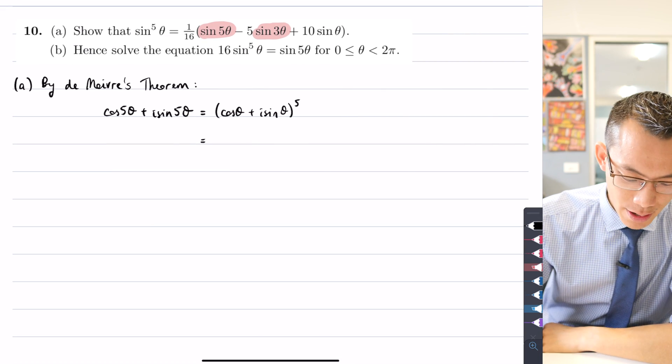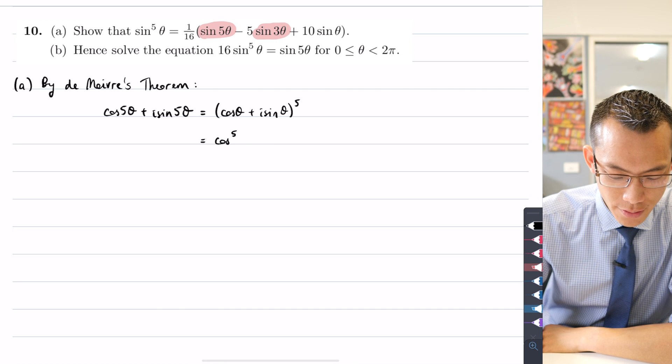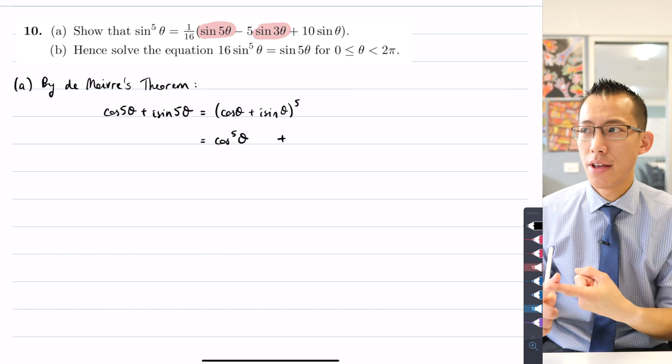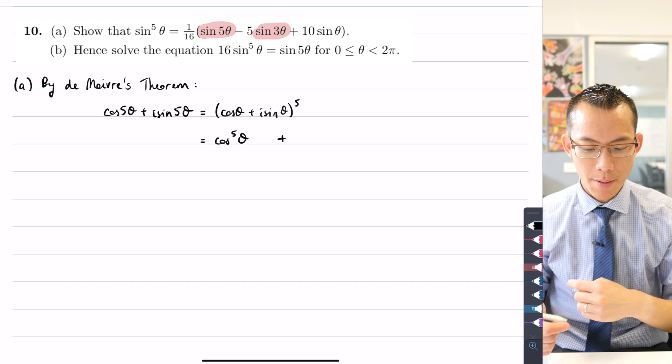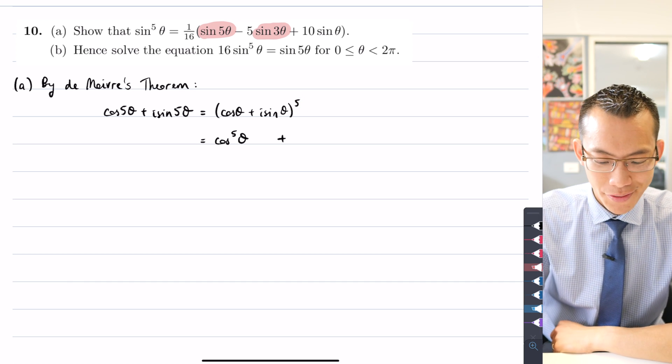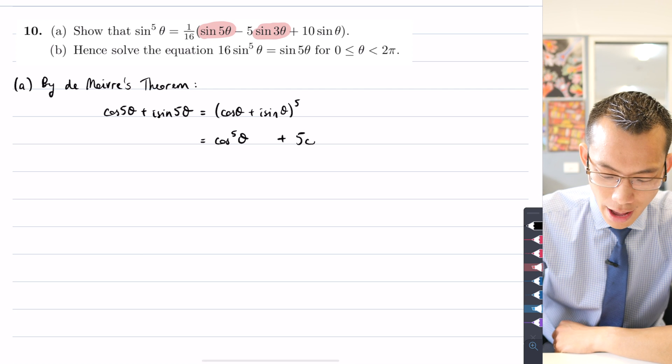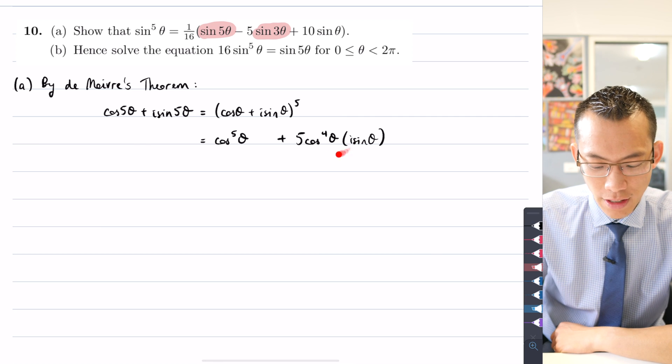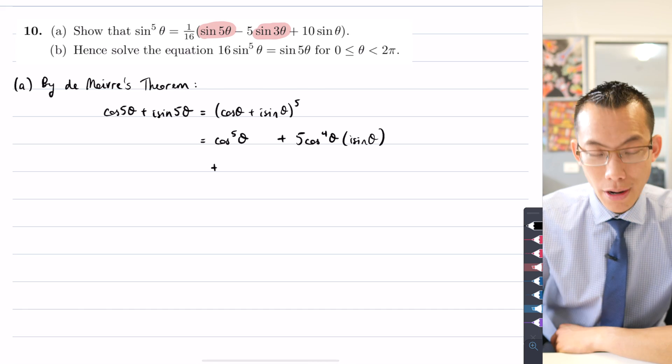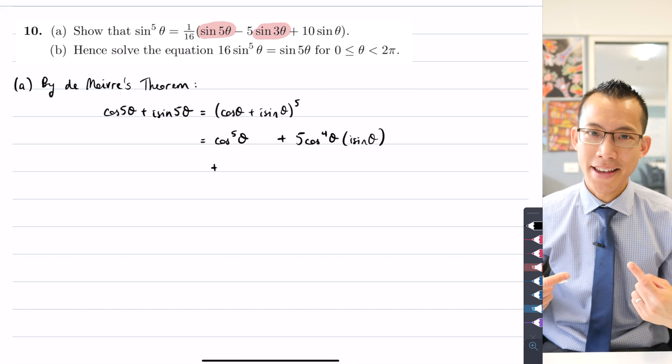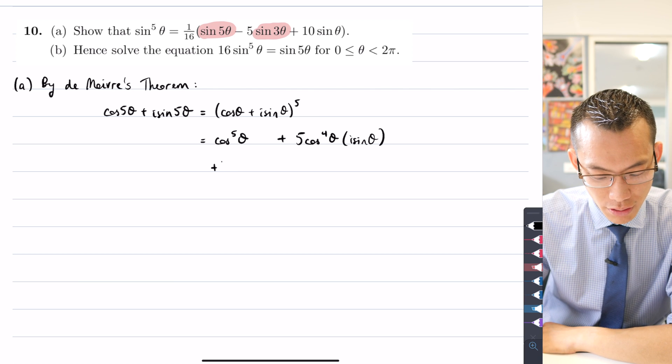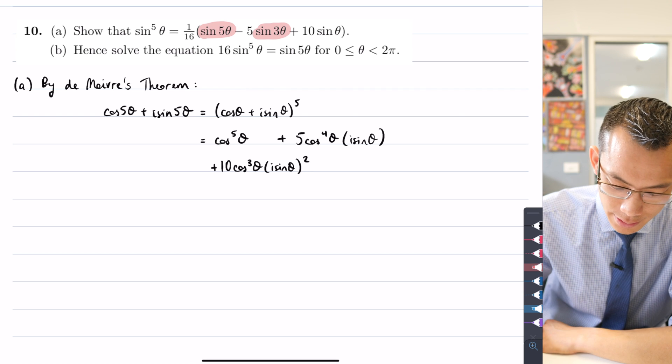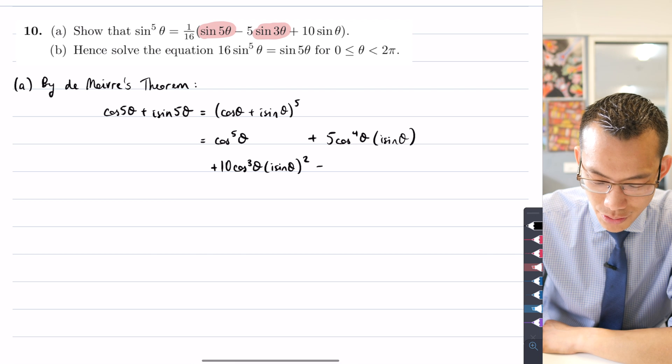So what's our first term going to be? Well, it's going to be cos⁵θ. And then I add my next one, I'll put it a little further along because I'm going to need the space. I'm going to have the binomial coefficient, how many powers of cos and how many powers of i sin θ I'm going to have. So because I'm on the fifth row of Pascal's triangle, my next coefficient will be 5. I will have one fewer cos θ and I'll have one more i sin θ. And so you can clearly see this is what's going to give us the imaginary component there.